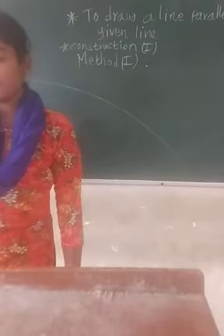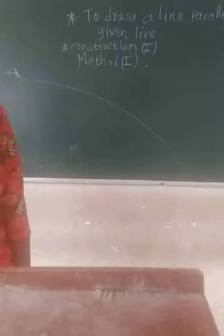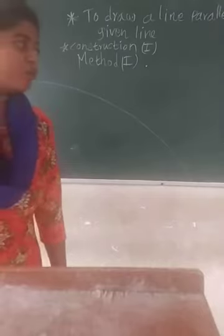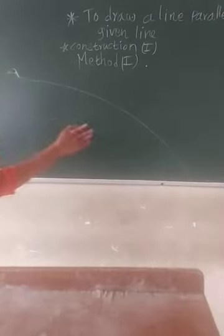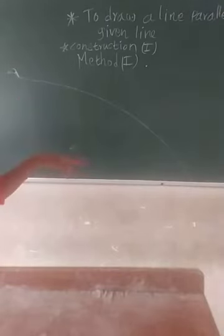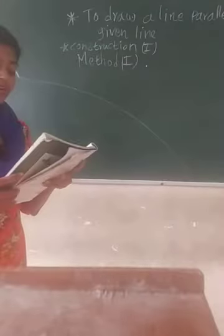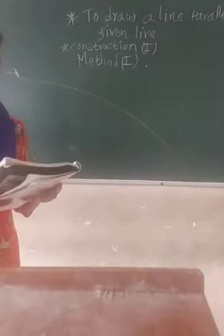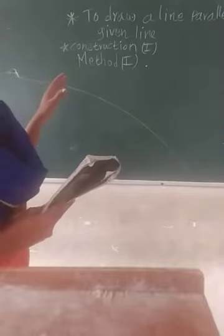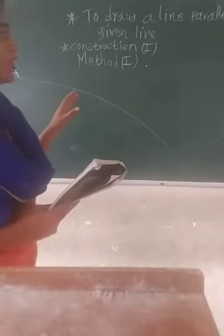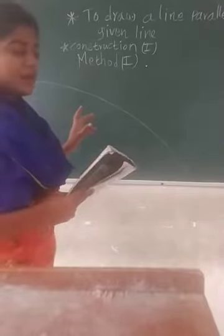There are two types of construction. Suppose we have given one point P outside of the line, and from that point we have to draw a parallel line. Or another method in which we have to draw one parallel line at a particular distance from the given line.